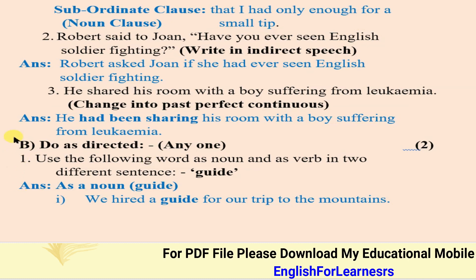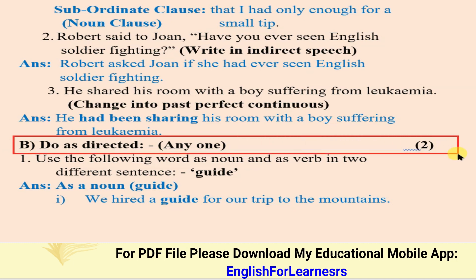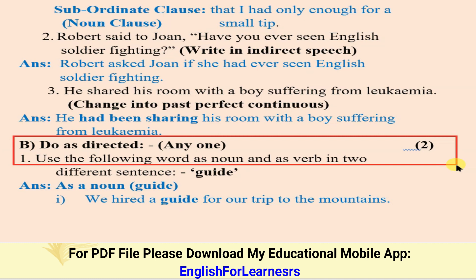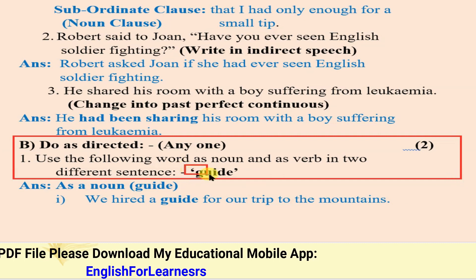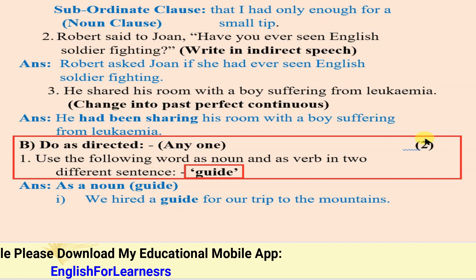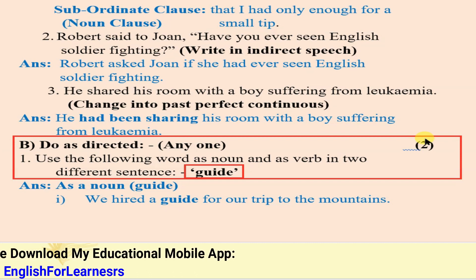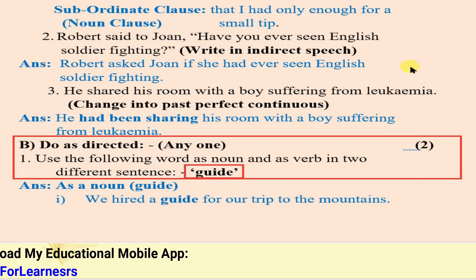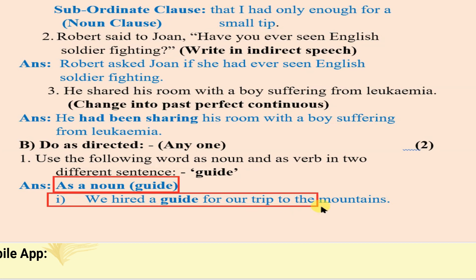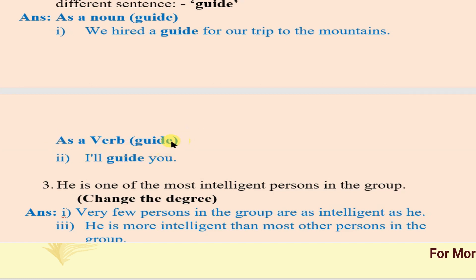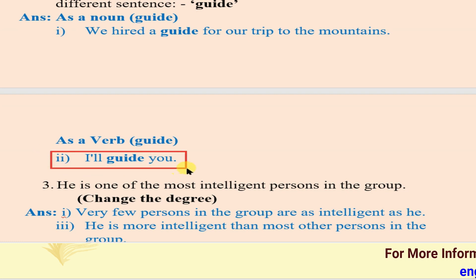Next, question number one B: do as directed, anyone, for two marks. Number one — use the following word as a noun and as a verb in two different sentences. The word given is 'guide'. As a noun: 'We hired a guide for our trip to the mountains.' As a verb: 'I will guide you.' Here 'guide' is used as a verb.